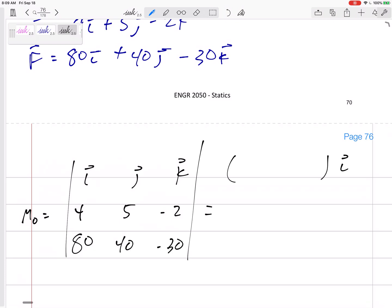So my i, I'll kind of start to go a little faster. 5 times negative 30 minus, sorry, minus negative 2, right? Be careful, times 40.